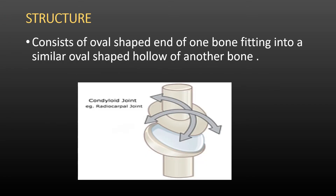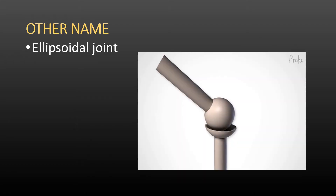Moving towards the structure of the condyloid joint: the two bones present along the condyloid joint differ in their structure. The first bone has a hollow-shaped end, and the second bone has an oval-shaped structure, which is mainly called the condyle. In this condyloid joint, the oval-shaped structure — the condyle — fits into the hollow end of the first bone, and the joint that forms is a condyloid joint.